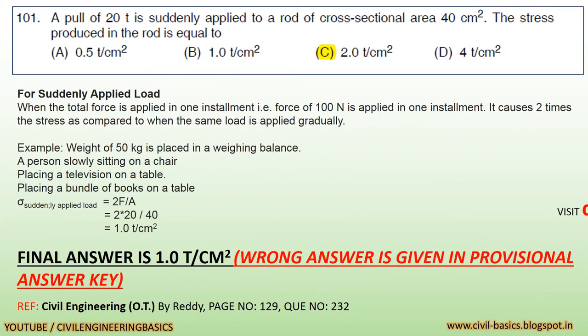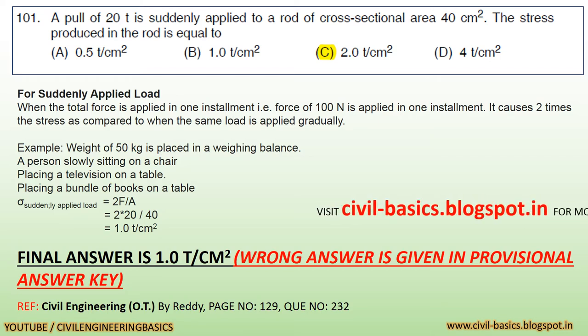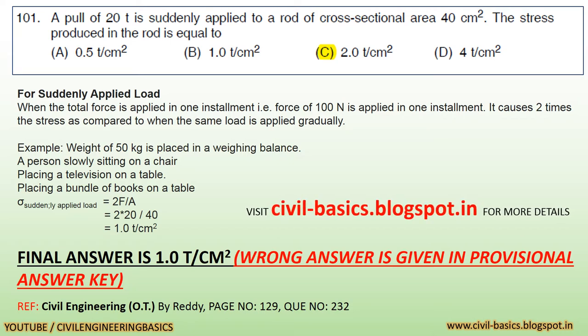Let's start. Question: A pull of 20 tonnes is suddenly applied to a rod of cross-sectional area 40 centimetres square. The stress produced in the rod is equal to: a) 0.5 tonne per centimetre square, b) 1.0 tonne per centimetre square, c) 2.0 tonne per centimetre square, d) 4 tonne per centimetre square.